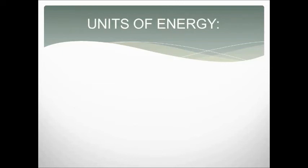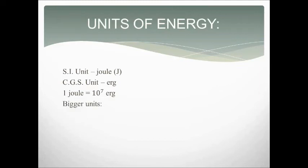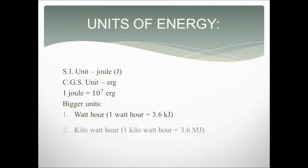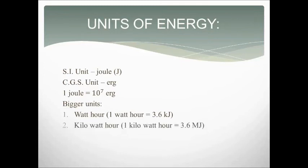What are the units of energy? The SI unit of energy is Joule and the CGS unit of energy is Erg. 1 Joule is equal to 10 to the power 7 Erg. We also use some bigger units to measure energy. 1 Watt-hour is the energy spent or work done by a source of power 1 Watt in 1 hour; 1 Watt-hour is equal to 3.6 kilojoules. The next bigger unit is kilowatt-hour: 1 kilowatt-hour is the energy spent or work done by a source of power 1 kilowatt in 1 hour; 1 kilowatt-hour is equal to 3.6 megajoules.